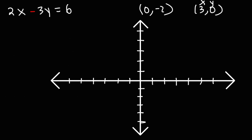Now all we need to do is plot the x and y-intercepts. The x-intercept is 3, 0 — x is 3, y is 0. The y-intercept is 0, negative 2. Then all you need to do is connect the two points with a straight line, and that's it.